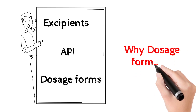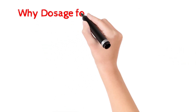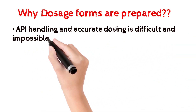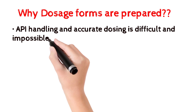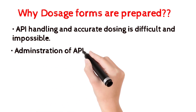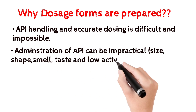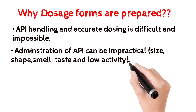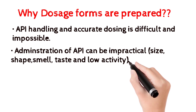Why are dosage forms prepared? There are four points. First, handling and accurate dosing of API is very difficult and impossible. Without converting API into a dosage form, accurate dosing cannot be achieved. Second, administration of API can be impractical because of size, shape, smell, taste, and low activity — it is practically impossible to administer API directly.